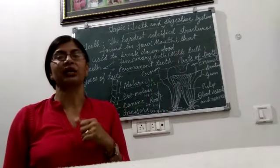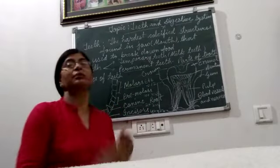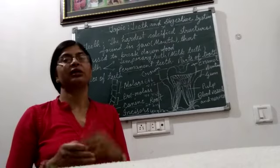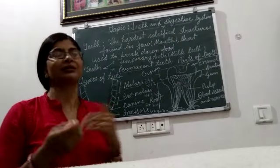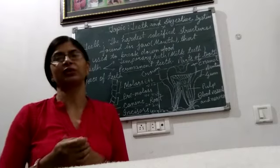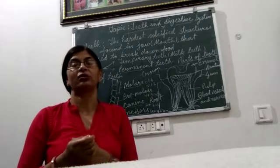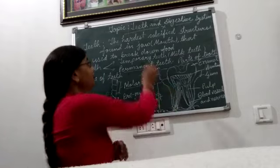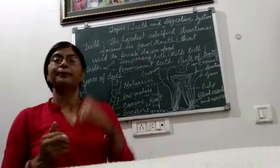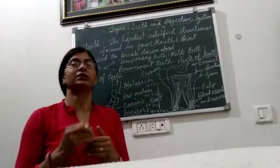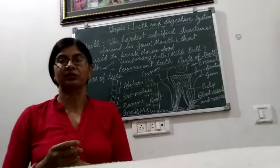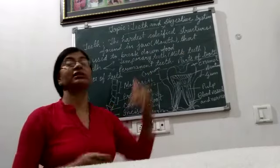Permanent teeth start to take the place of temporary teeth. By 2 to 3 years old, 20 teeth are developed and that set of teeth is called temporary teeth or milk teeth. But between the age of 5 to 12 years, temporary teeth start falling off and permanent teeth take their place.